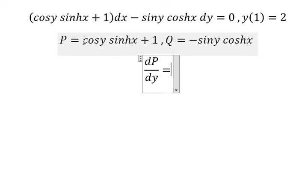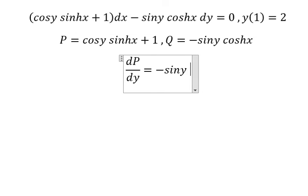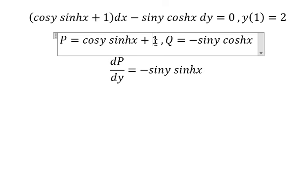So first the derivative of cosy we have negative siny sinhx. This one, that is about the constant, so you got zero.